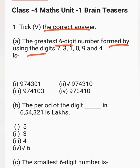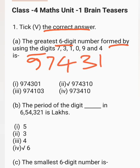To form the greatest number using the given digits, we have to arrange the given digits in descending order — from largest to smallest. Arranging: 9, 7, 4, 3, 1, 0. So the correct answer is 9,74,310.